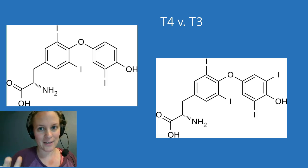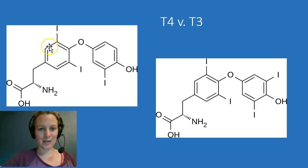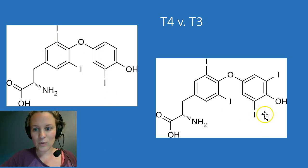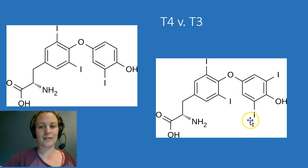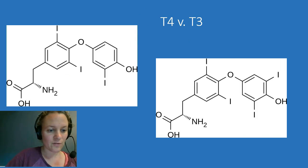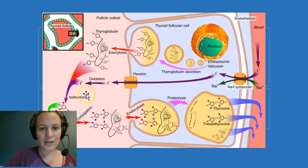And we can keep on building, because the next thing that can happen is these tyrosines can actually combine. So if we combine an MIT and a DIT, we will wind up with three iodines: one, two, three. That's called T3, that's a combination of MIT and DIT. Or T3. And over here we've got two DITs added together, so we've got one, two, three, four iodines. And that is what's known as T4.